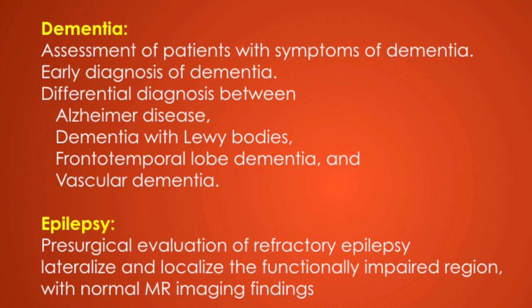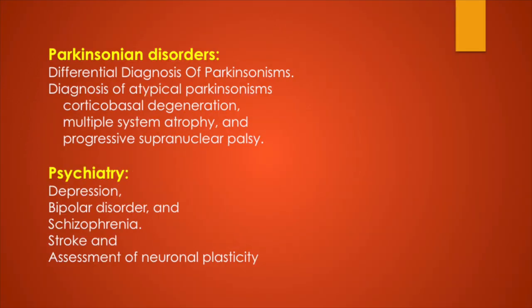Coming to dementia, this is a wide entity with a lot of conditions. PET is used for assessment of patients with symptoms of dementia, early diagnosis, and differential diagnosis between Alzheimer's disease, dementia with Lewy bodies, frontotemporal lobe dementia, and vascular dementia. Another important application is epilepsy for pre-surgical evaluation of refractory epilepsy, to lateralize and localize the functionally impaired region with normal MRI findings. For Parkinson's disorders, differential diagnosis of Parkinsonism includes atypical forms such as corticobasal degeneration, multiple system atrophy, and progressive supranuclear palsy. Psychiatry applications include depression, bipolar disorders, schizophrenia, stroke, and assessment of neuronal plasticity.